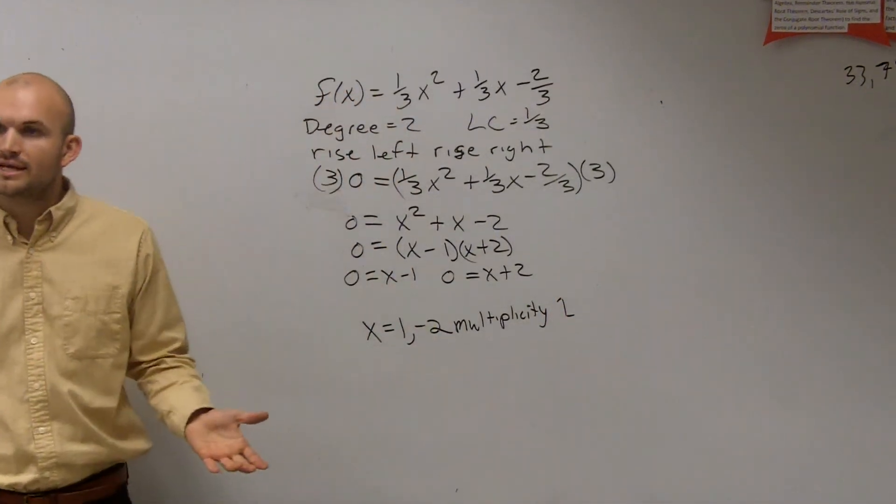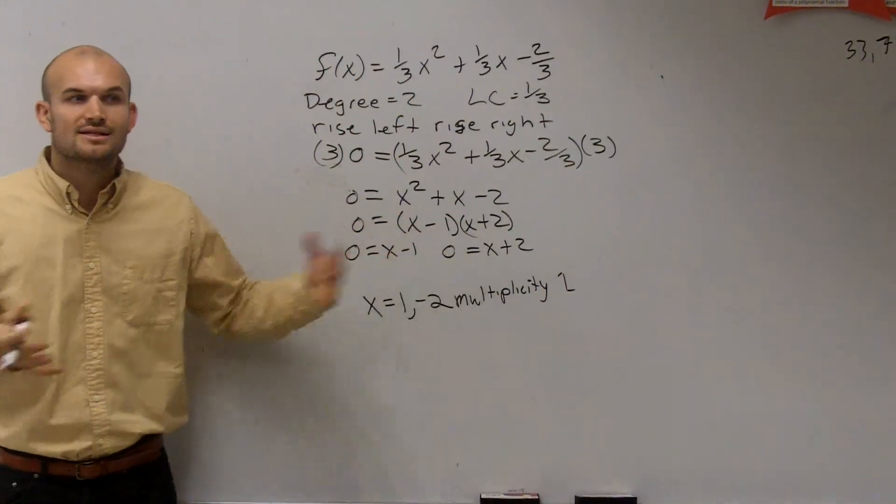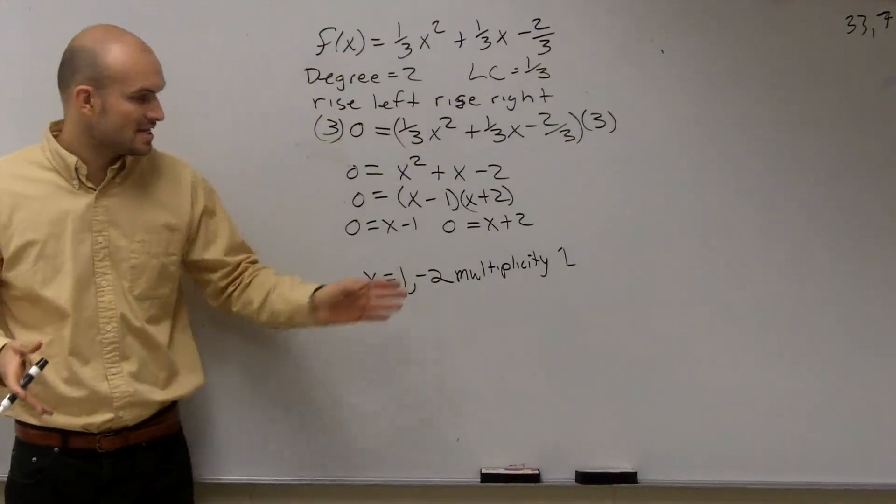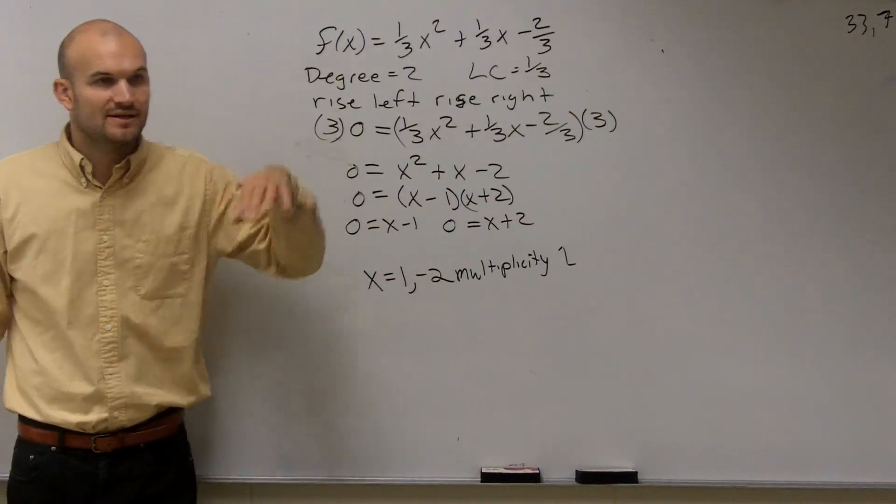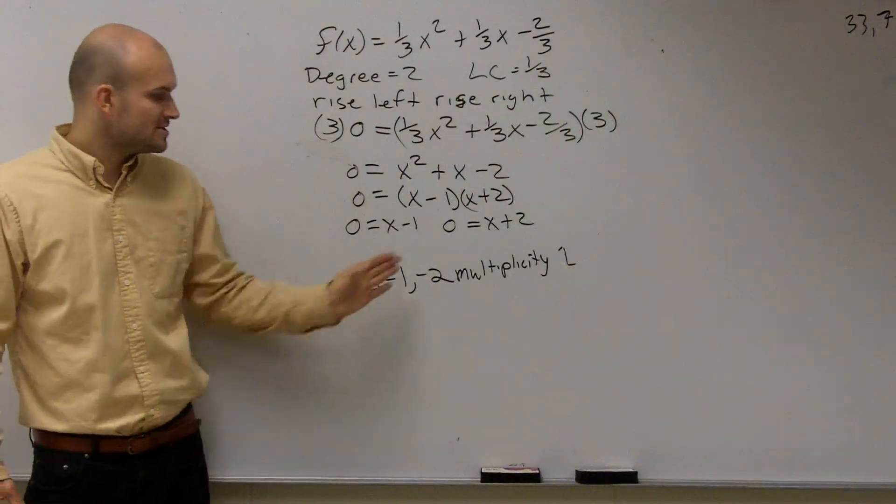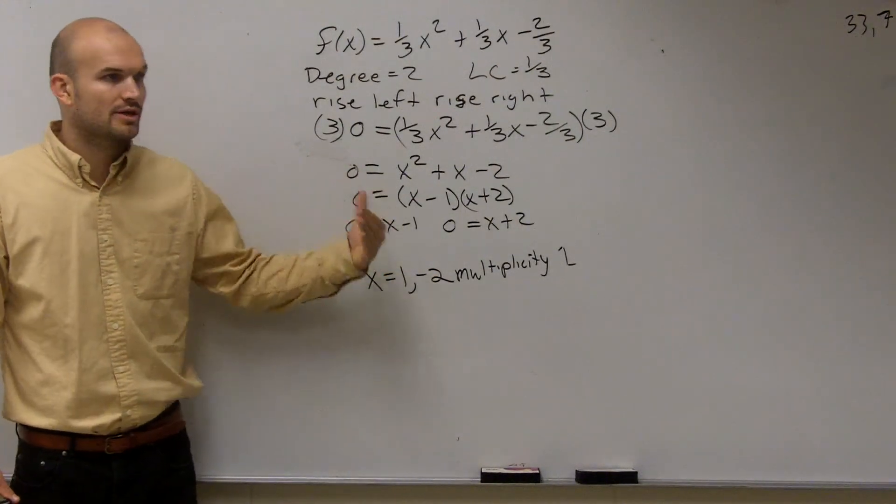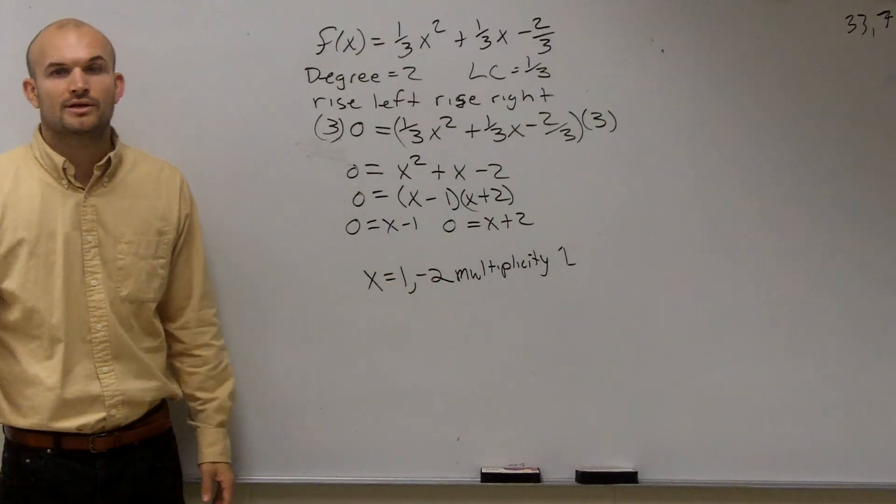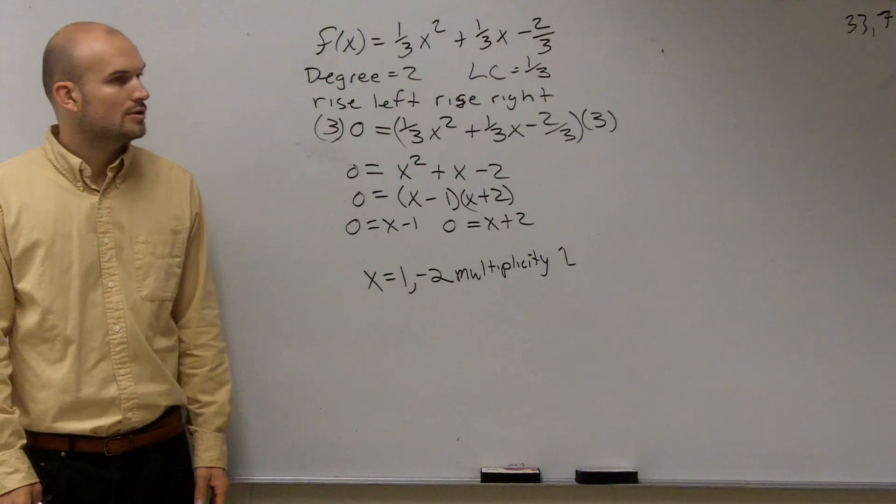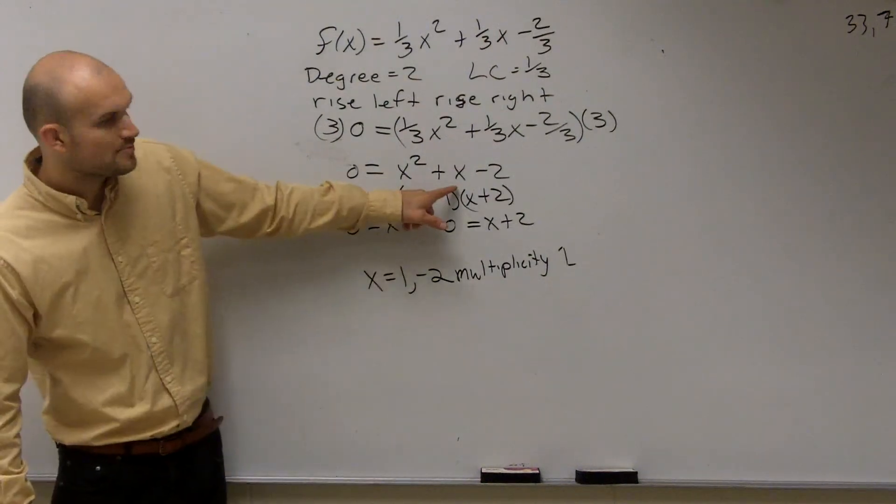And why is it important to understand that multiplicity? Multiplicity 1 is going to tell us that they're going to cross at these zeros. Remember if it was multiplicity even, it touches and it kind of rebounds? Multiplicity 1 tells us that these zeros, when we're going to look into graphing, it crosses at these two zeros. That's why it's really important to understand a multiplicity. How do you know it's a multiplicity 1 again? The exponent of your factor.